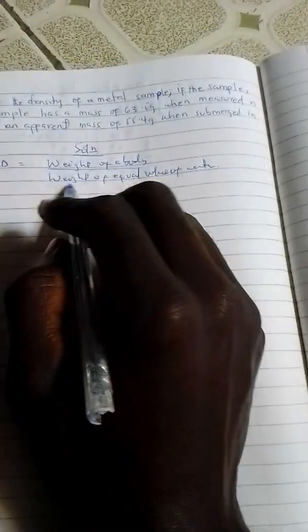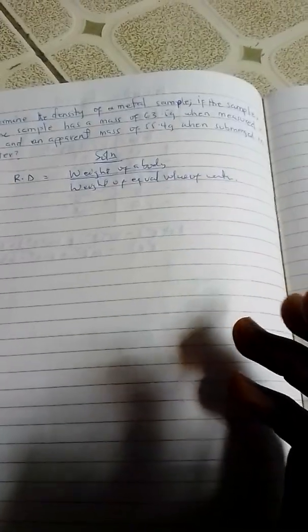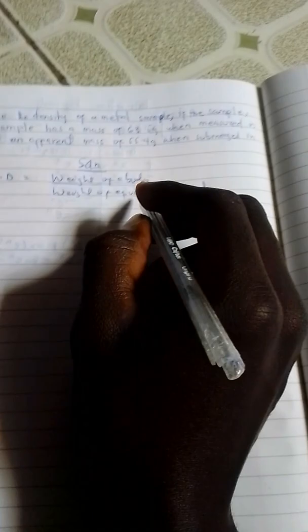The weight is just the mass times gravity. But the weight of equal volume of water is the same as upthrust, and upthrust is equivalent to the buoyant force. Let's find the buoyant force so we can get our relative density.